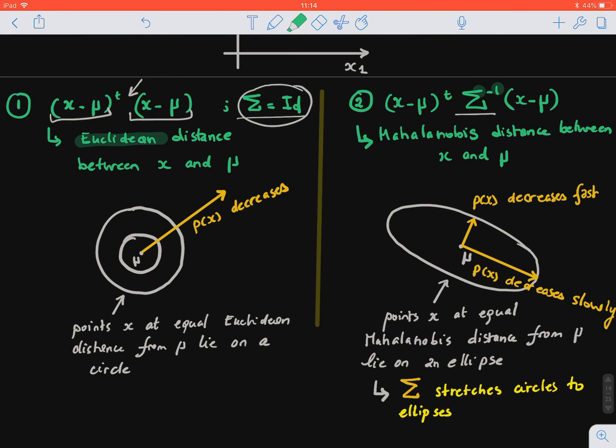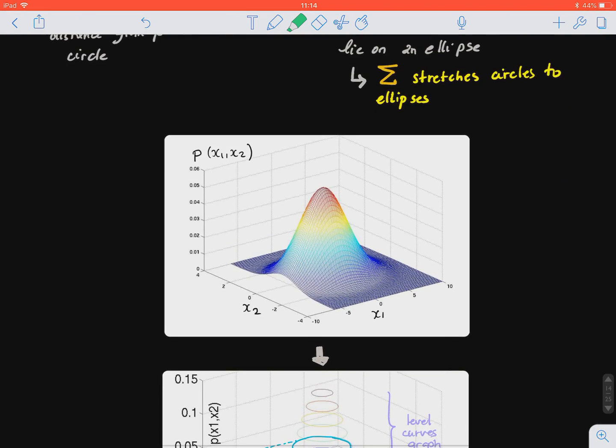And in the other case, if we keep the Σ, then this actually defines the Mahalanobis distance between x and μ. Now let's look closer at this.